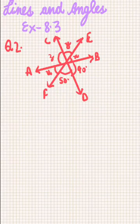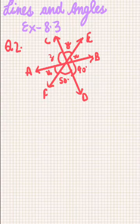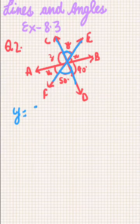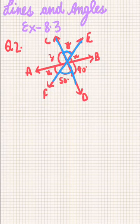Now let's move to Question 2. Here we can see that y will be equal to 50 degrees, because the lines are intersecting — y simply equals 50 degrees because of vertically opposite angles.